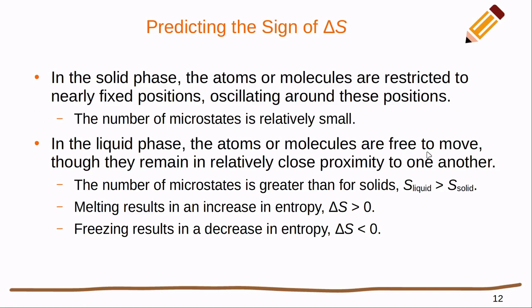In the liquid phase, the atoms and molecules are now able to freely move around. They can take on more and more microstates, but they are still restricted in that they have to stay in close proximity to one another. This means that the number of microstates is greater than for solids. The entropy of a liquid is going to be greater than the entropy of a solid. If we start thinking about processes where we move between solids and liquids, we can start to predict the sign of delta S. For instance, melting where we're moving from low entropy solids to higher entropy liquids, we're going to have an increase in the entropy for that system. And freezing, the reverse of that, we're going to have a decrease in the entropy.